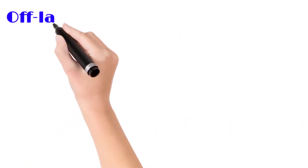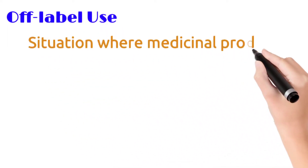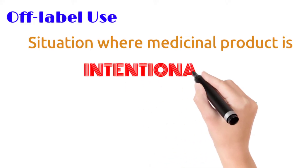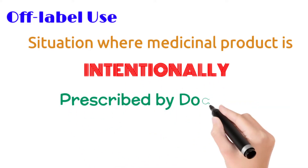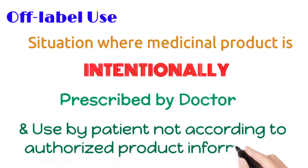First we will discuss what is off-label use of drug. Off-label use is a situation where a medicinal product is intentionally prescribed by a doctor and used by a patient not according to authorized product information. In simple language, the drug is intentionally not used or prescribed as it was approved by the regulatory authority.